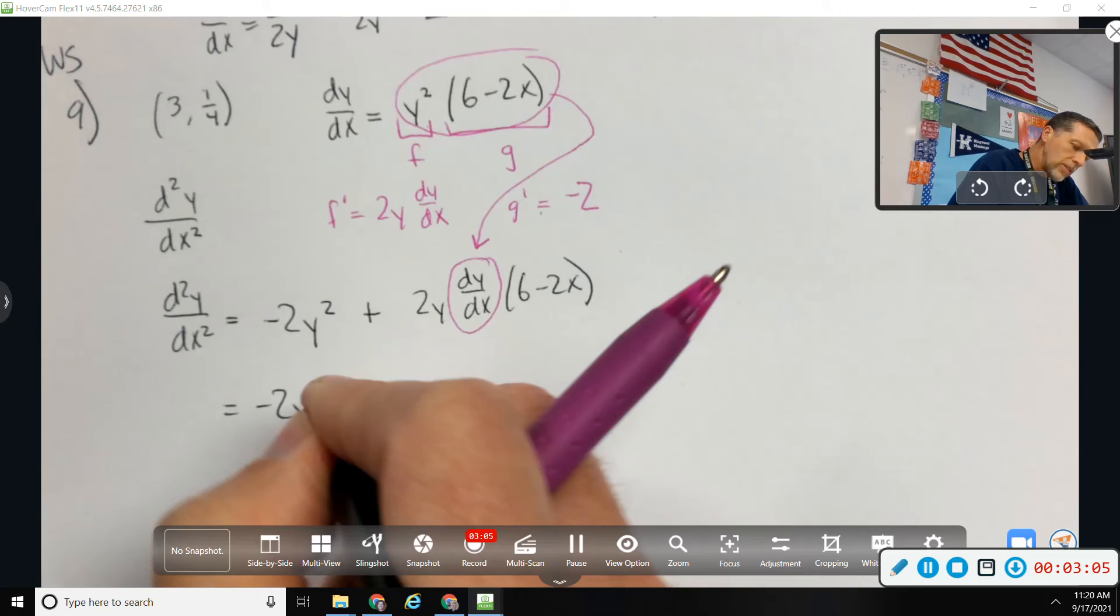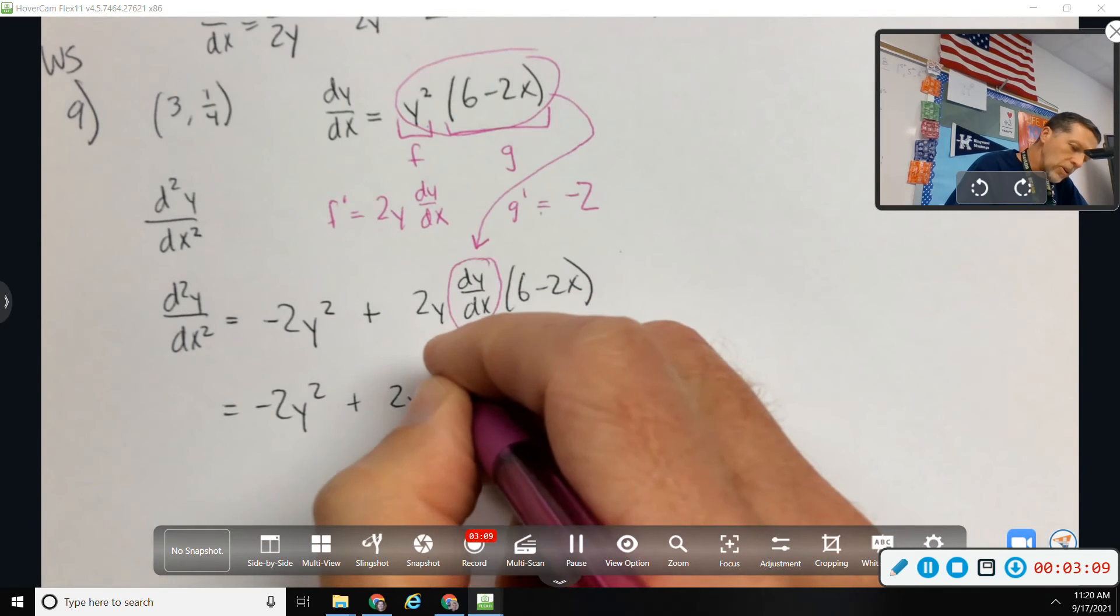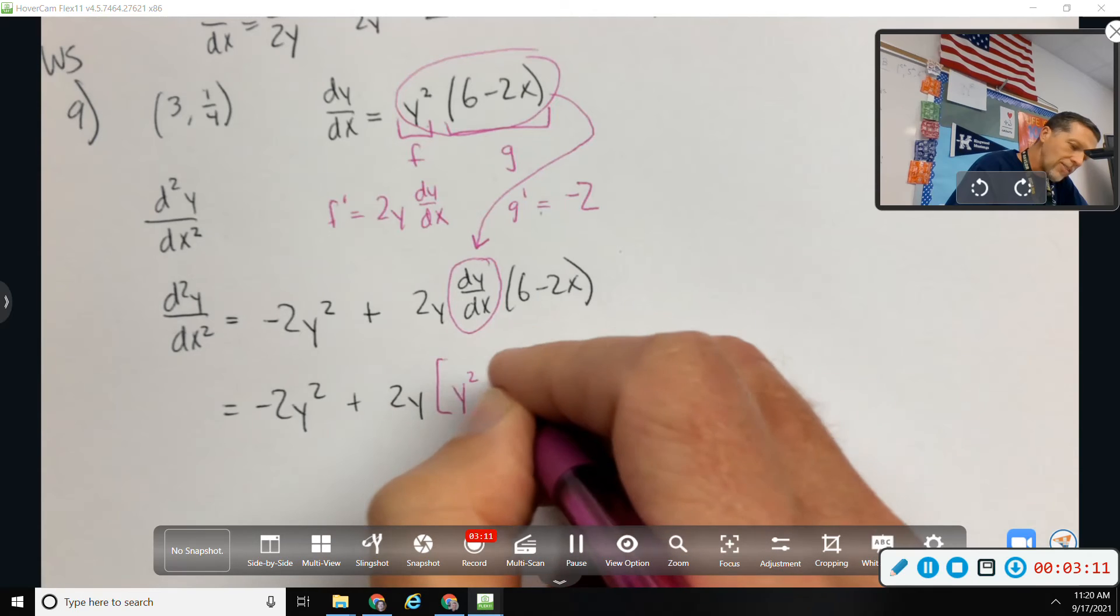So negative 2y squared plus 2y. And then we know what dy dx is, because they gave that to us.